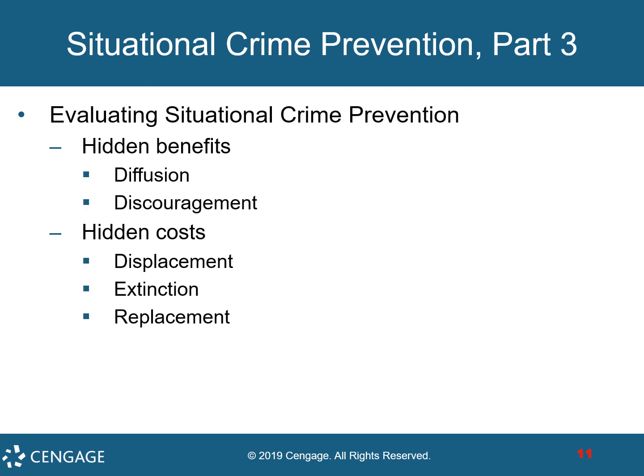When evaluating situational crime prevention, there are hidden benefits and hidden costs. Hidden benefits include diffusion — where efforts to prevent one crime unintentionally prevent another — and discouragement, where crime control efforts targeting one locale help reduce crime in surrounding areas. Hidden costs include displacement, where crime control in one area moves crime to another; extinction, where short-term positive effects dissipate as criminals adjust; and replacement, where criminals try new offenses to replace those neutralized by prevention efforts.